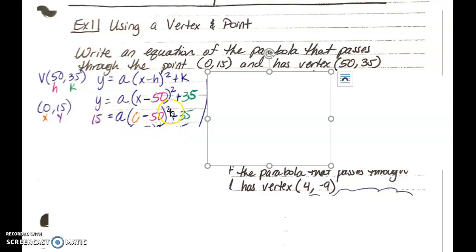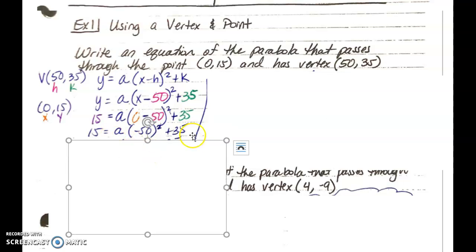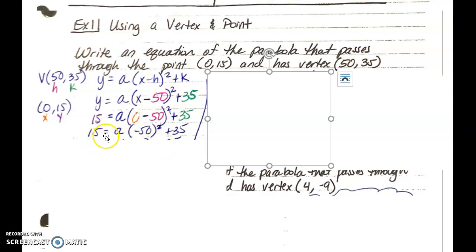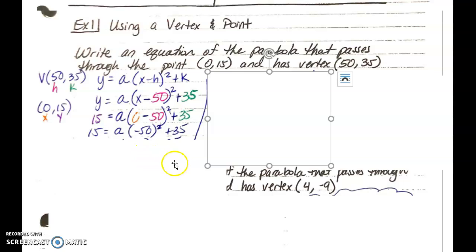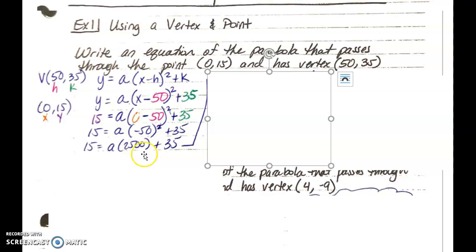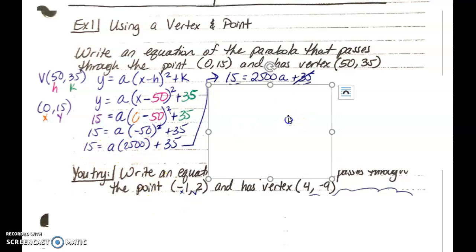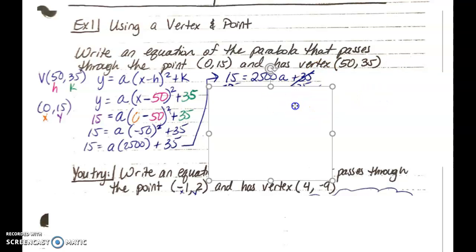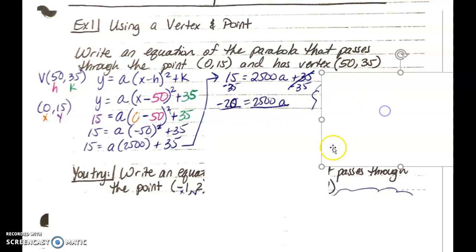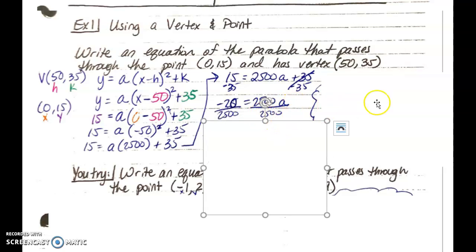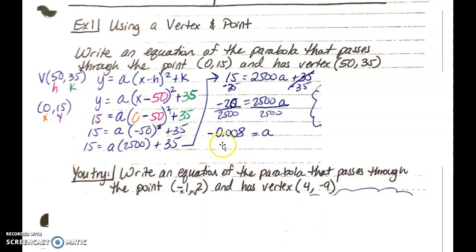And so when you plug in your x and your y from the point that was given, you end up with 15 for y is equal to a, because that's what we're looking for, parentheses 0 for the x minus 50 squared, plus 35. And from here, we're going to simplify. So first in the parentheses, we're going to do 0 minus 50. That gives us negative 50. So 15 is equal to a times negative 50 squared plus 35. We're going to square this guy. Negative 50 squared is negative 50 times negative 50, which brings us to 2,500 here. Now, this is the same thing as 2,500 times a. So I have 15 is equal to 2,500 a plus 35. Subtract 35 on both sides to solve. That gives me negative 20 is equal to 2,500 times a. Divide by 2,500 on both sides. So I divide negative 20 by 2,500. And that actually gives me a nice a of negative 0.008.